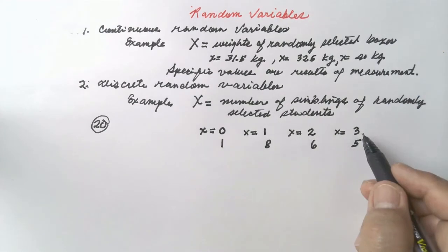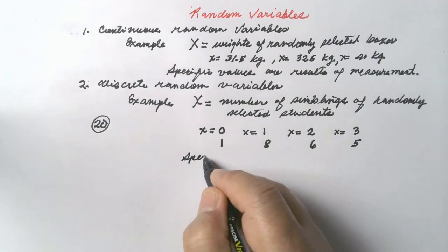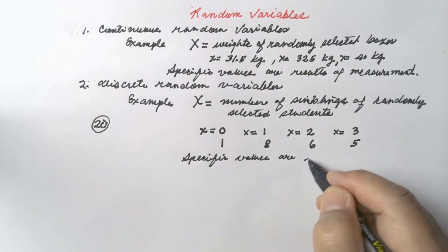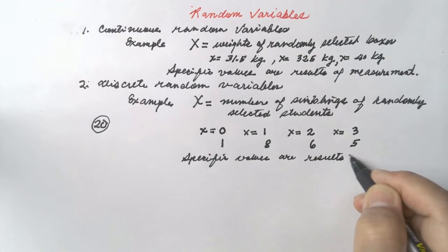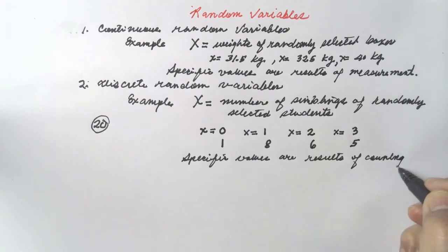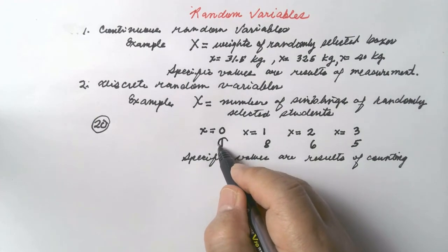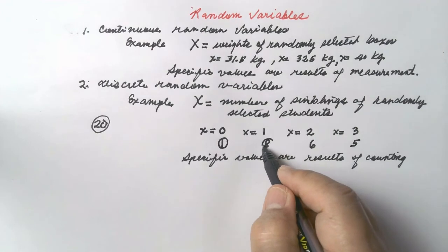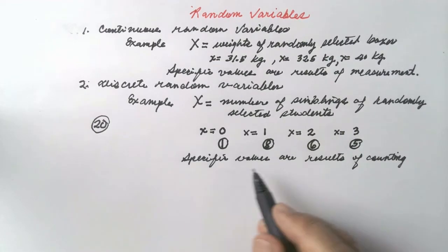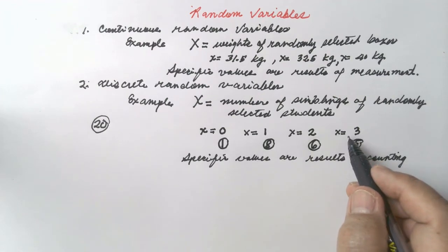These specific values — x equals 0, x equals 1, x equals 2, x equals 3 — are results of counting. To distinguish them from the number of students: 1 student, 8 students, 6 students, 5 students — a total of 20 students. These values can be put in a table.